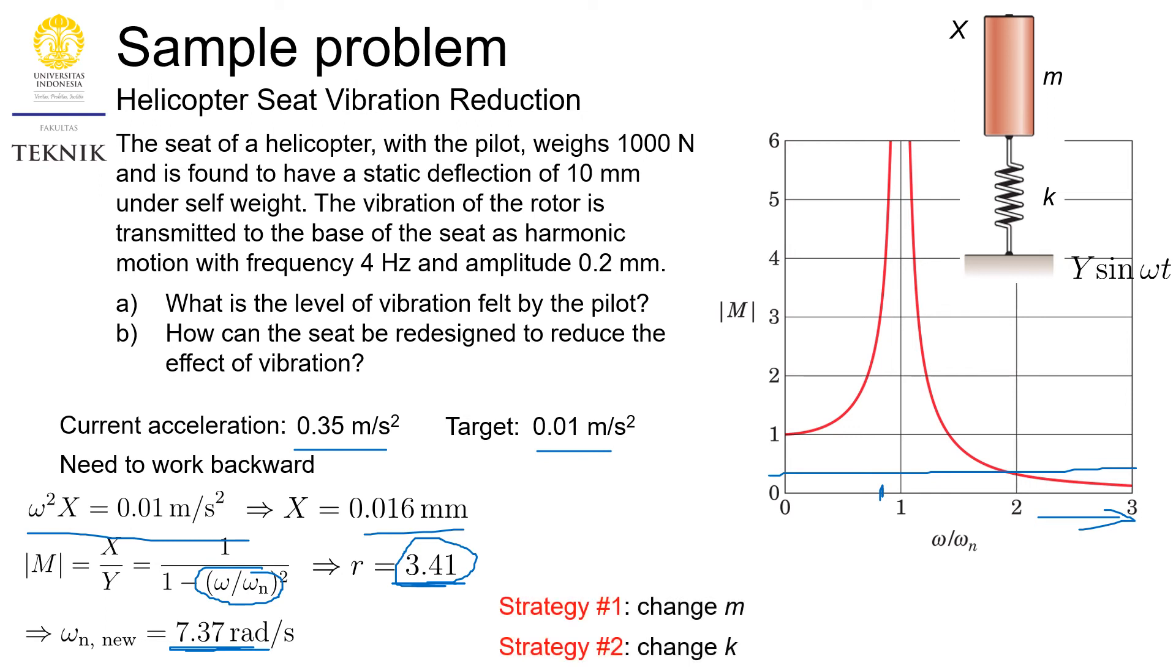So, you know, with all this found, we have two strategies to reach this new value of omega_n. Because it is a function of m and k, we can always change our m and we can always change our k. But then changing m is not always desirable because that means adding mass to the helicopter, which is not very good. So we can try to change the value of k, the stiffness.